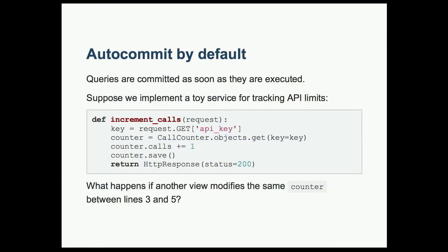So the first pitfall is auto commit by default. Queries are committed as soon as they're executed. So suppose we implement some toy service for tracking API limits. We have this simple Django view. It gets a call counter, increments the number of calls, and then saves it. But what happens if another view modifies the same counter between lines three and five?